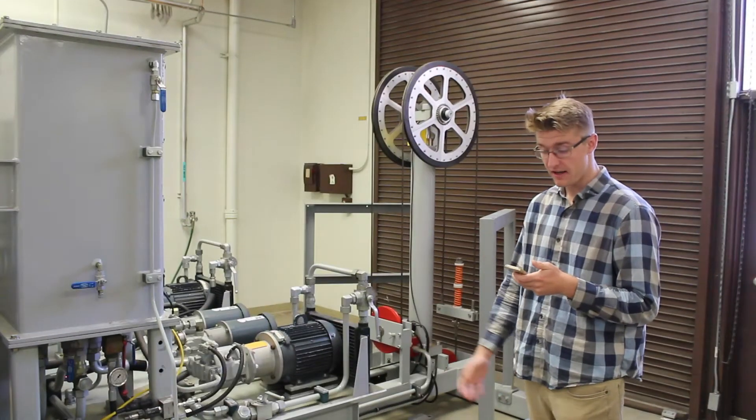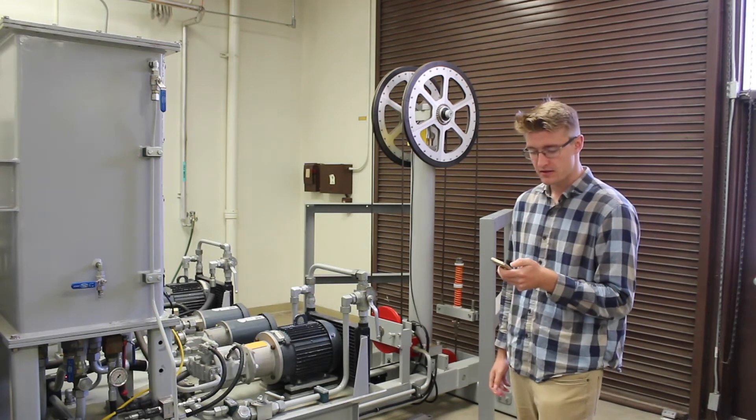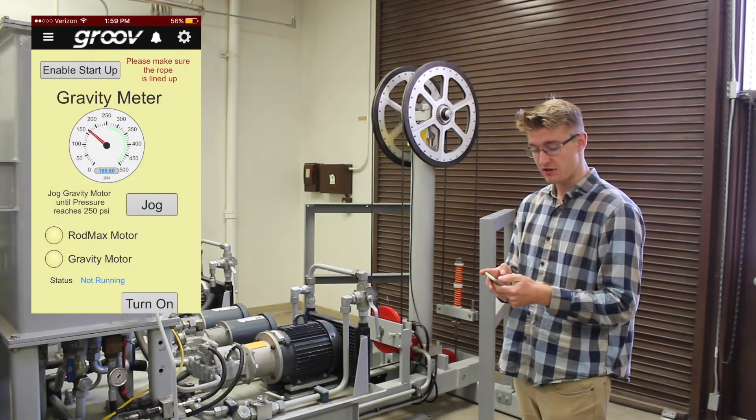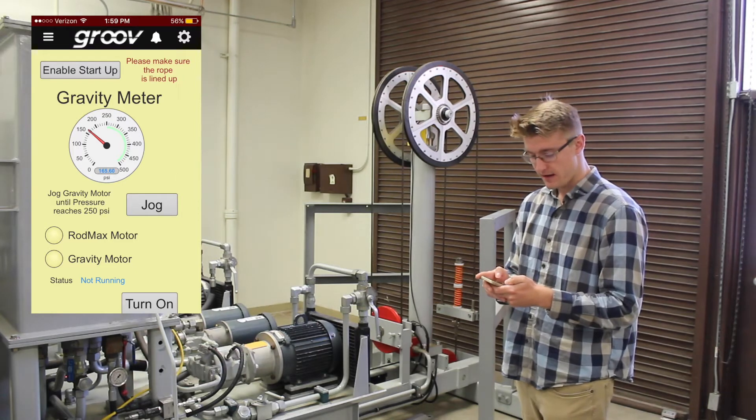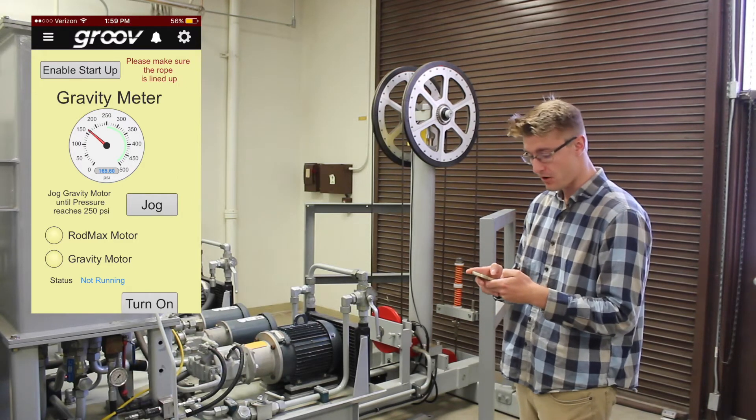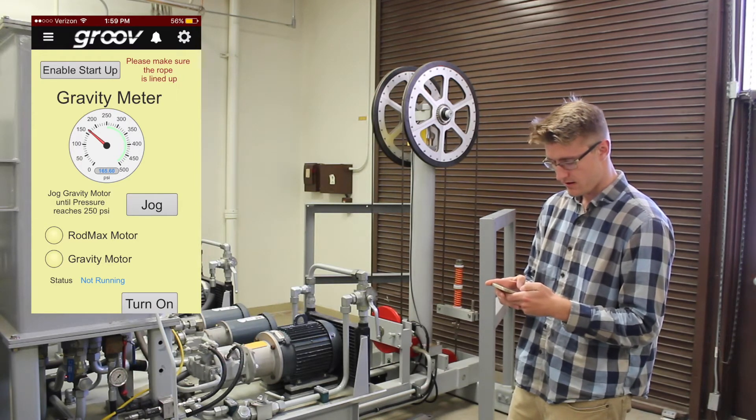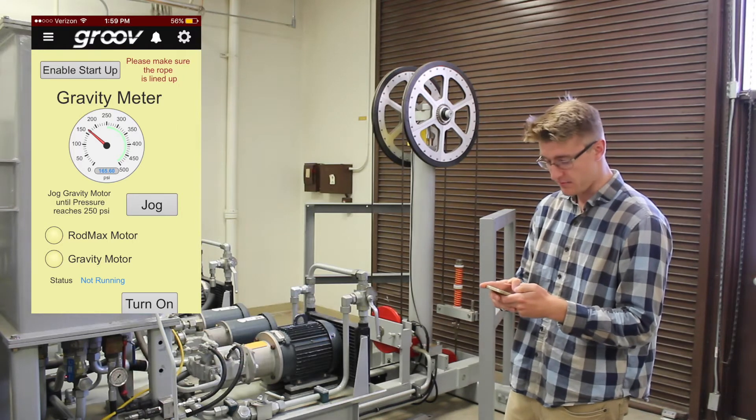Okay, I'm going to explain how to use our human machine interface to start the pump. So we're going to go to our startup page. We're going to enable our startup and then to make sure our gravity motor has enough pressure we're going to jog it and then I'm going to press the turn on button.